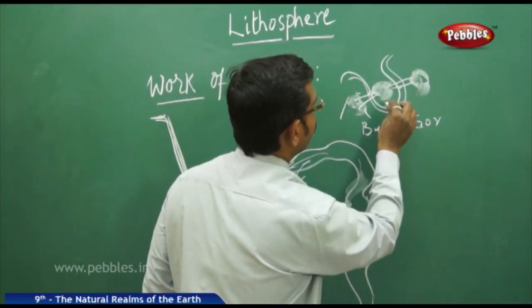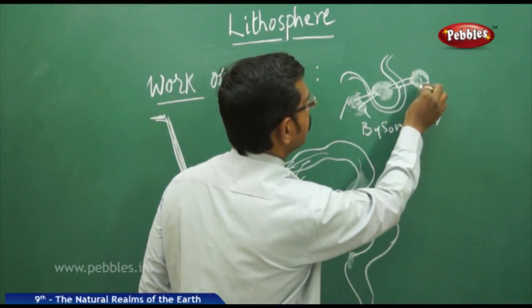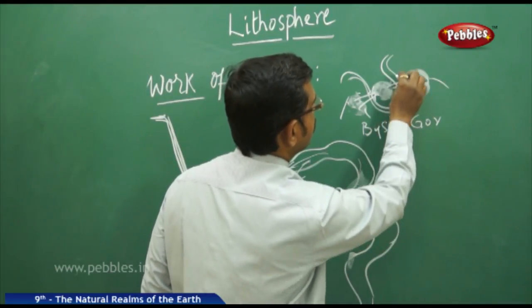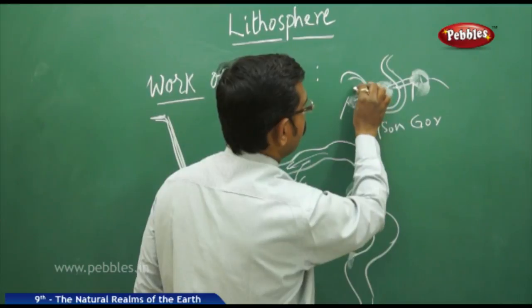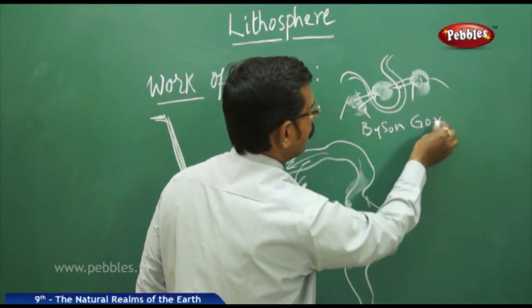Bison Gorge is found on the Godavari River in Andhra Pradesh. You will find a hill here, a hill here, and a hill here, and inside you will find the water flowing through.